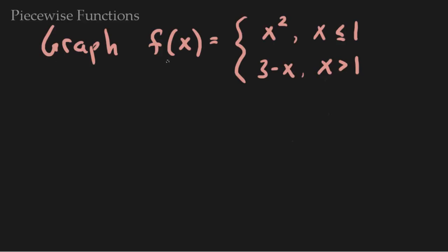I want to graph f equals the piecewise function defined as x squared when x is less than or equal to 1, and the line 3 minus x when x is greater than 1.